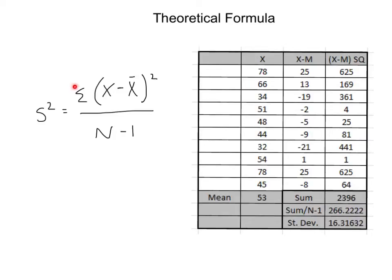Following this theoretical formula, it's the sum of (x minus the mean) squared. So, the first step we have to do is the parentheses, x minus the mean. I calculated each of the scores and subtracted them from the mean of 53. And then you square each of those scores to get rid of the negative sign. So I squared 25, 13, negative 19, negative 2, and so on. I then summed them up, and that gives me a sum of 2,396. I divided by n minus 1 and got a variance.